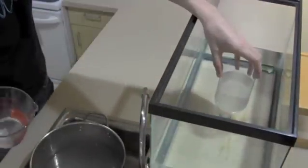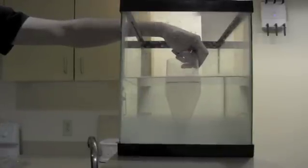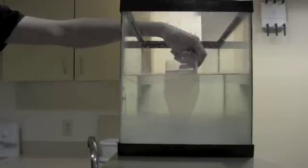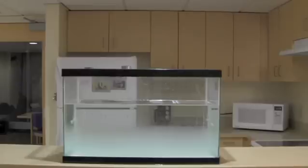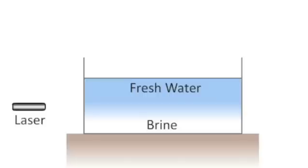We're using a funnel to put the salt solution at the bottom of the tank. We've let the tank sit for a while to allow the fresh water and the salty water to mix a little. You can see that the concentration of salt changes across the boundary, and so does the index of refraction. The more salt there is, the harder it is for the light to move forward, and thus the higher the refractive index.